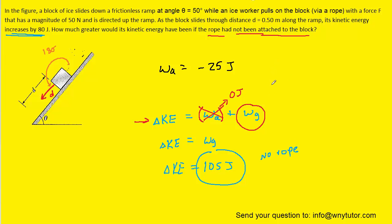The change in kinetic energy when there was a rope attached to the block was 80 joules. So, that's with the rope. So, now, it's a relatively easy comparison. We can see that when there was no rope present, the change in kinetic energy was greater by 25 joules. And so, this becomes the correct answer to the question.